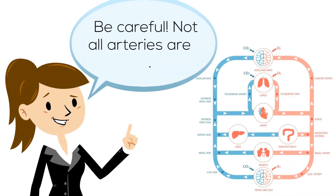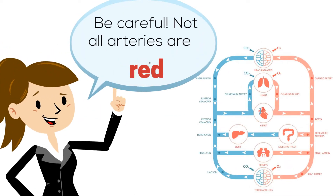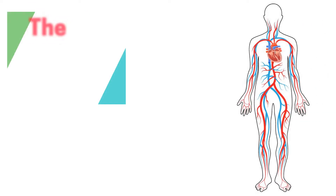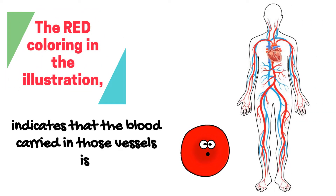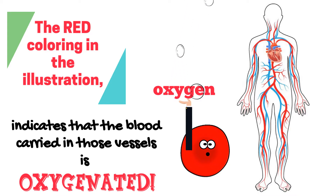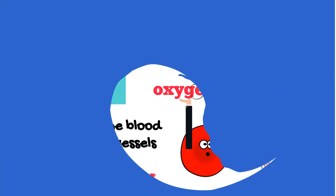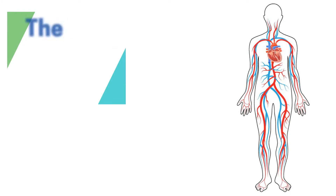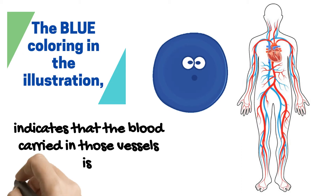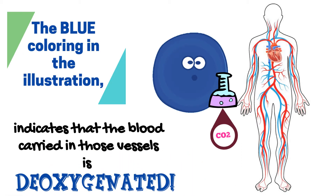Be careful — not all arteries are red and not all veins are blue. The red coloring in the illustration indicates that the blood carried in those vessels is oxygenated. The blue coloring in the illustration indicates that the blood carried in those vessels is deoxygenated, meaning they are carrying carbon dioxide.